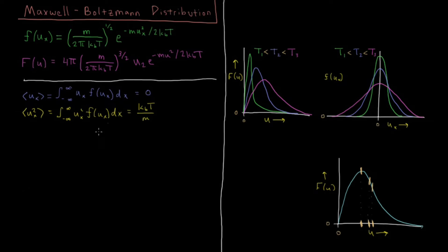Now for the total speed u: if we want to calculate the average value, we integrate from 0 to infinity of u times f(u) du. Taking this distribution and multiplying by u gives a u³ term, and we integrate that from 0 to infinity.